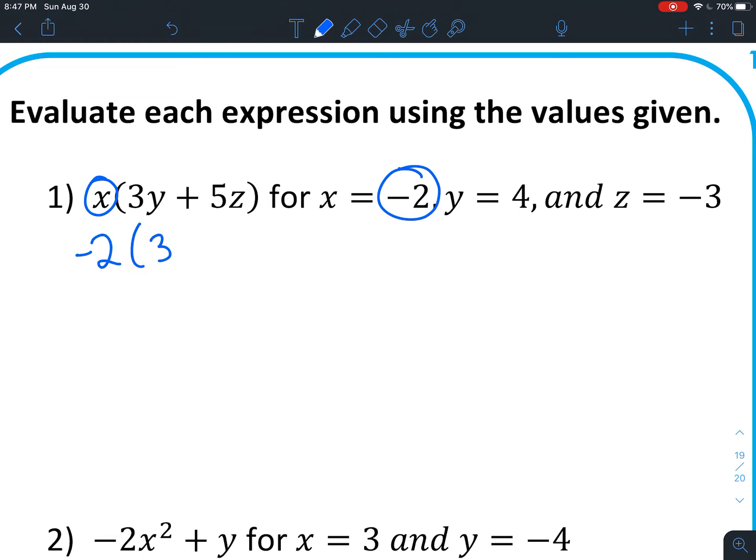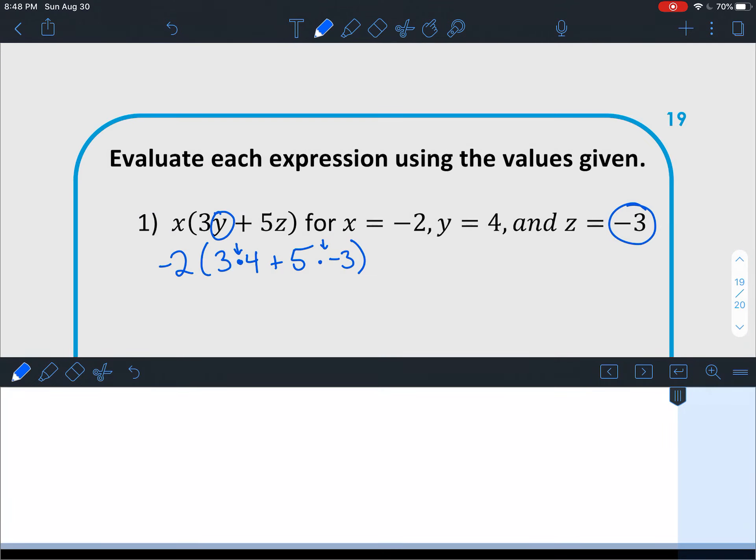Now we start copying down everything. Next we need a y because right here we have a y. Y is 4. So we're going to put 3 times 4 plus 5. And now we have a z. z is negative 3. So 5 times negative 3. We've done our first step. We've replaced the variables with the numbers. Now we're going to follow the order of operations. We've already put in our multiplication symbols for anywhere that we had the variable and the number right next to each other. That's our next step because we do parentheses first, and inside the parentheses we'll do multiplication before addition.